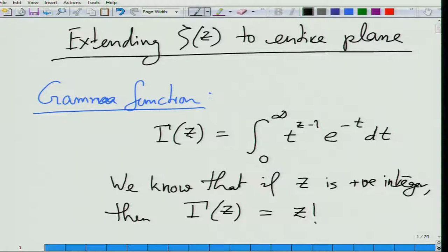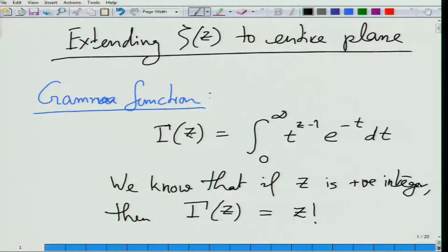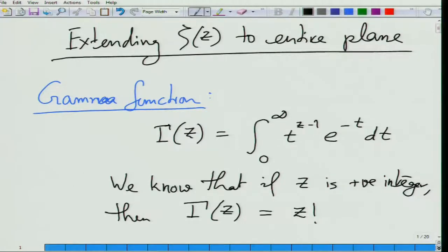So do you get z factorial or z minus 1 factorial? You get z factorial — you integrate t to the z minus 1, that is right. Now think of z as a complex number. Firstly, this is defined for positive integers very clearly, but when z is not a positive integer it does not have such a nice closed expression.